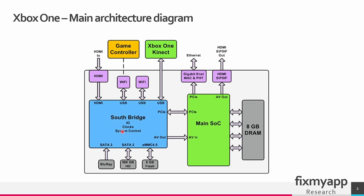The second component is the Southbridge, which is another important component. It is responsible for all the input and output functions. It also manages the USB, the Ethernet port, and audio/video output. The Southbridge chip also provides different system level functions such as power management and system security. The Southbridge is the low speed part of the system, and the SOC is the high speed part.